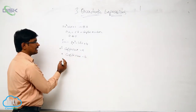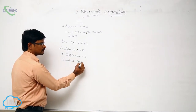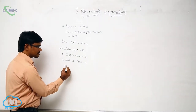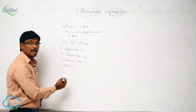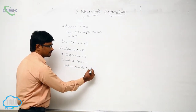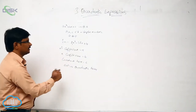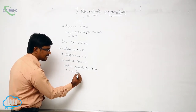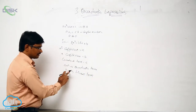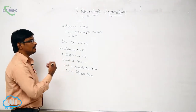B is the x coefficient and C is the constant term. The Ax squared term is called the quadratic term, since x is raised to the power 2. The Bx term is called the linear term, since x is raised to the power 1. And C is the constant term.